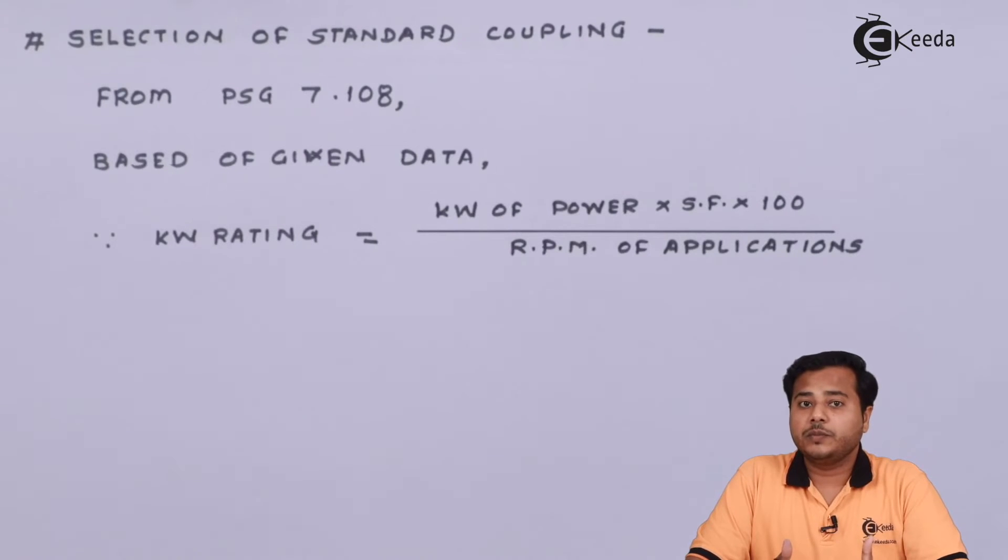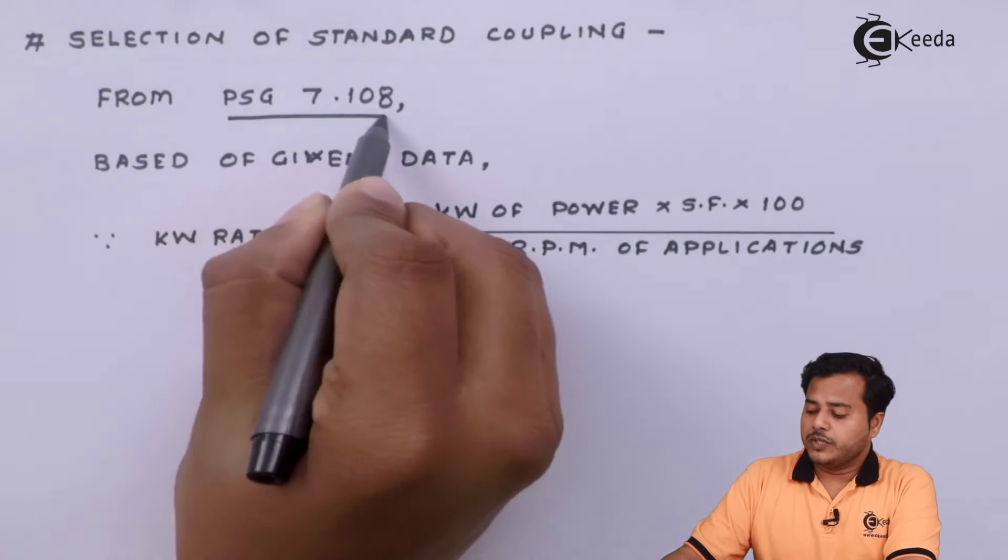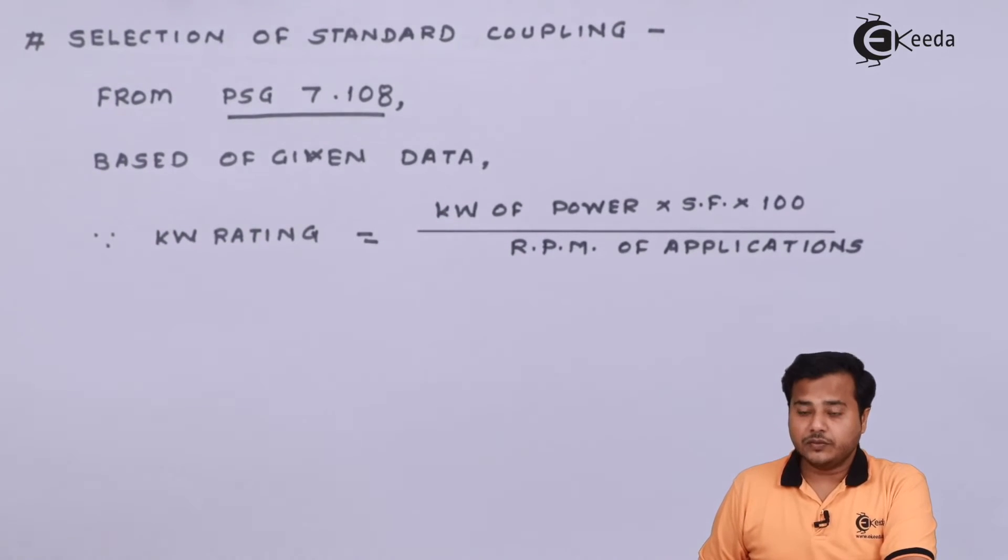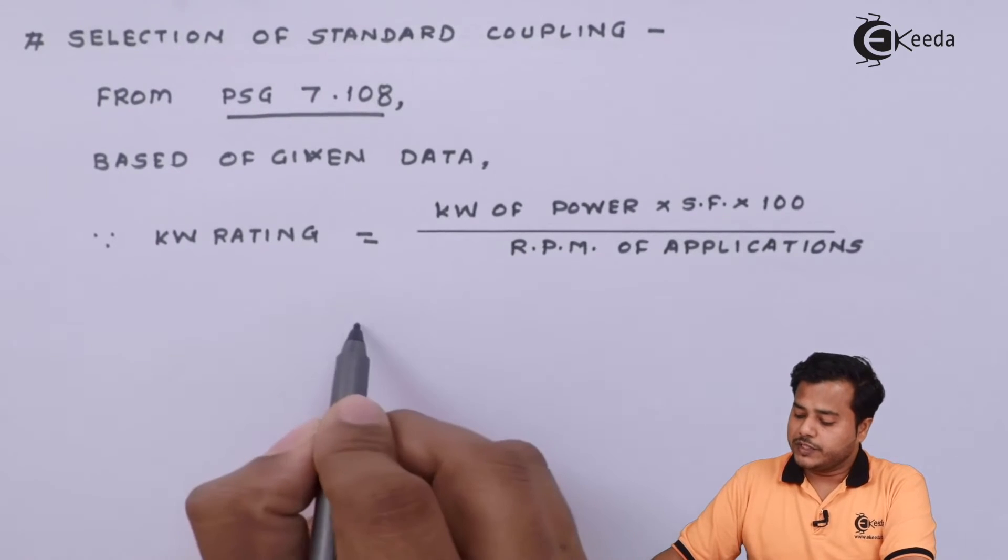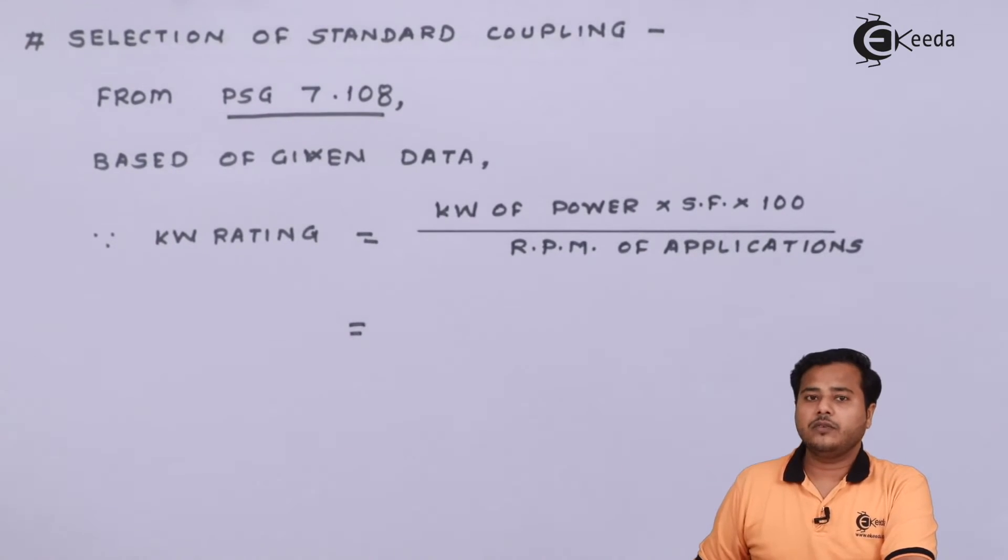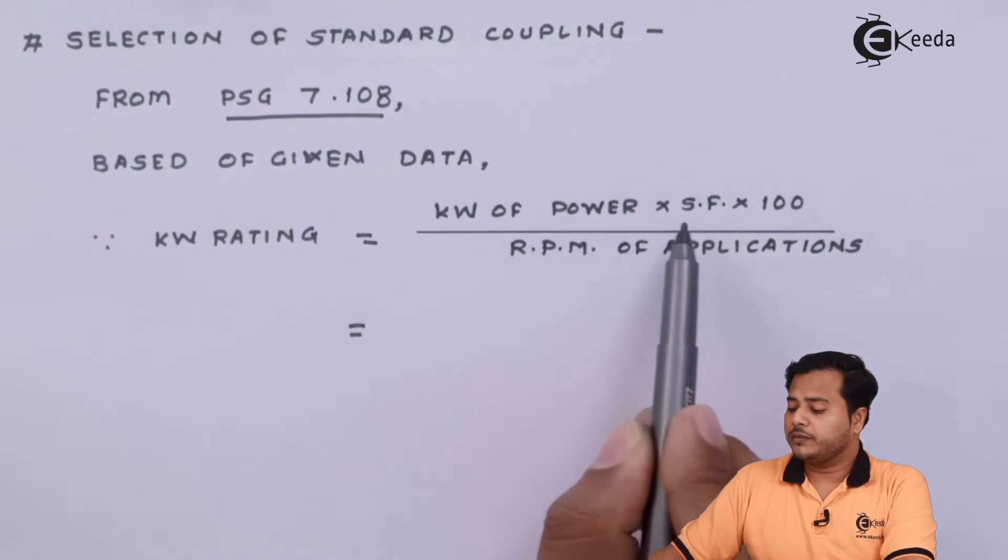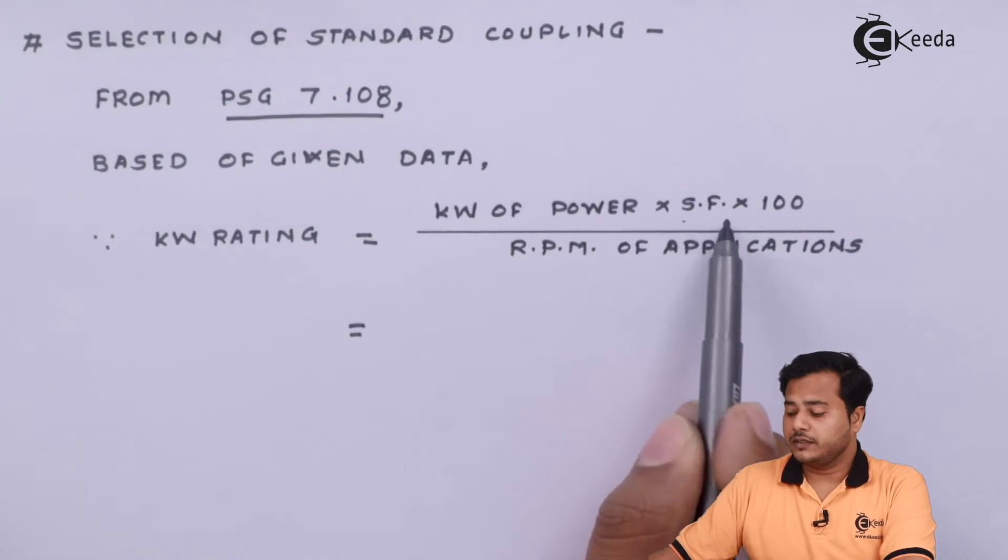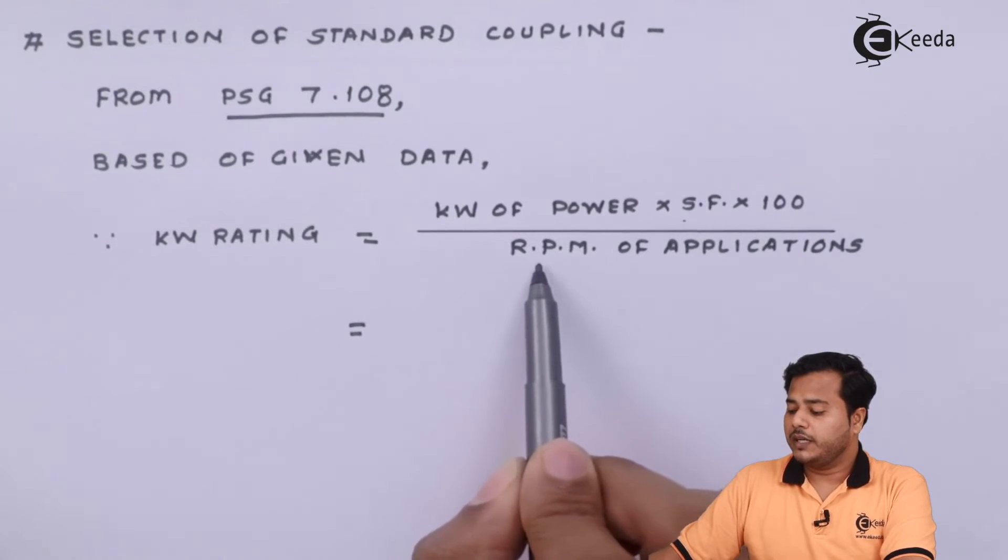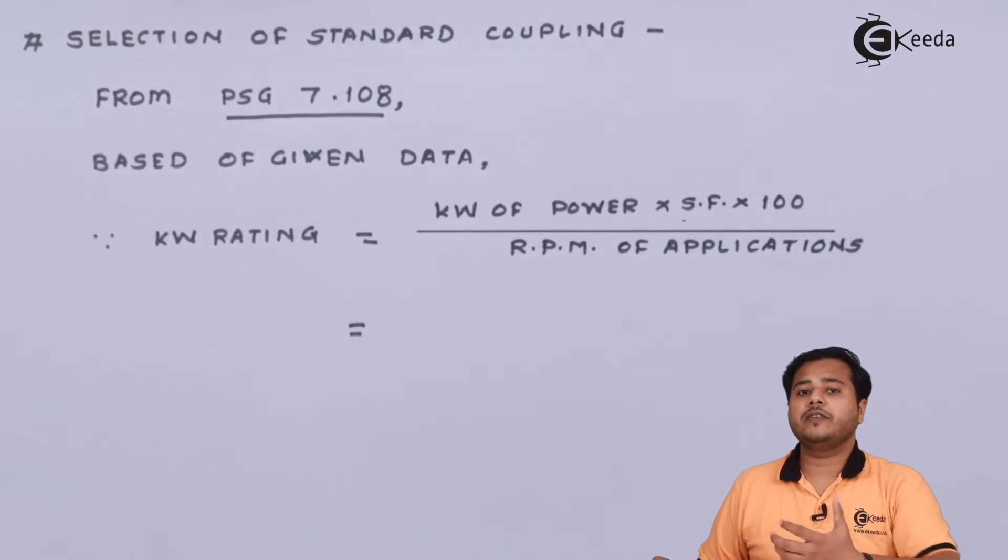The standard coupling again we can refer to PSG data book 7.108, 7.107 where the standard rigid and standard flexible couplings are given with their values. So from PSG 7.108 based on the given data of course we have to find out the kilowatt rating first, which is given with this particular formula. Formula is available on the page you can by heart also. It is the kilowatt power into the service factor into 100 divided by RPM of the applications.